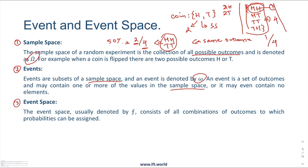The third concept is event space. Event space is an extension of event. Event space consists of all combinations of outcomes to which probabilities can be assigned. So head-head is an event space, head-tail is another event space, and an event space can be head-head and tail-tail together. Basically, anything to which we can assign a probability is referred to as an event space. It is denoted by Latin F.